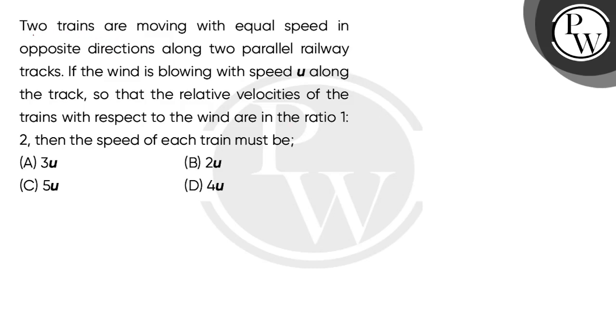Let's read the question. Two trains are moving with equal speed in opposite directions along two parallel railway tracks. If the wind is blowing with speed u along the track so that the relative velocities of the trains with respect to the wind are in the ratio 1 is to 2, then the speed of each train must be.